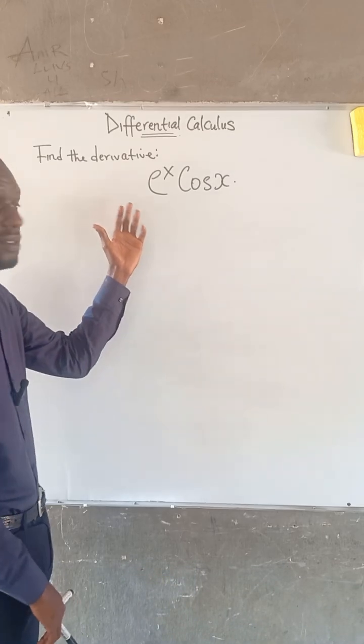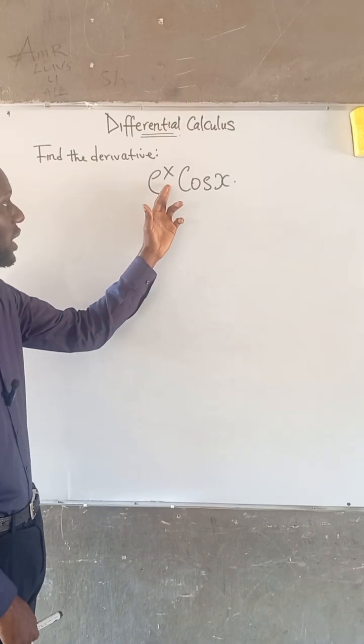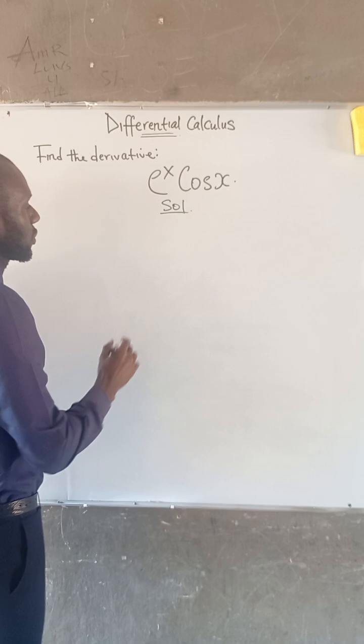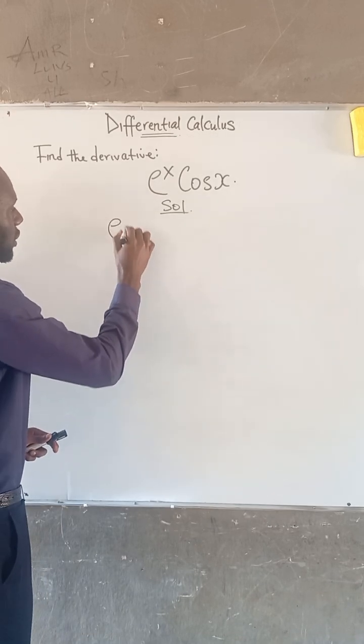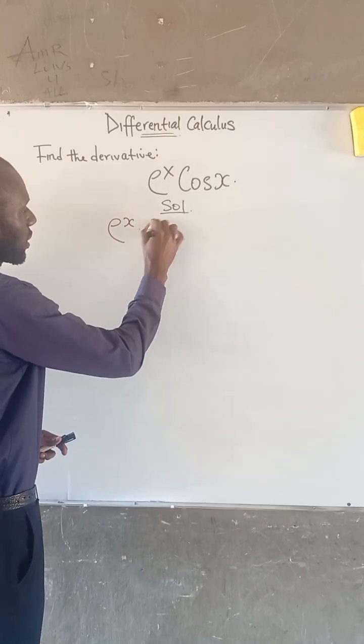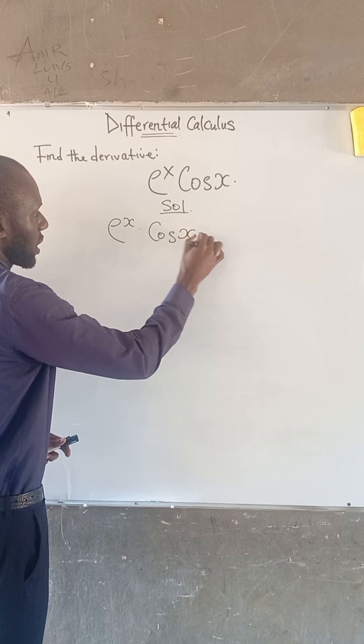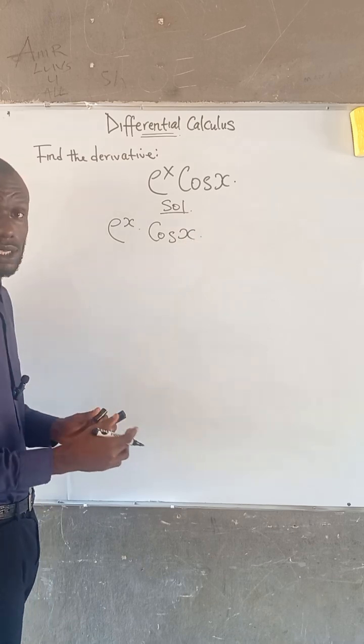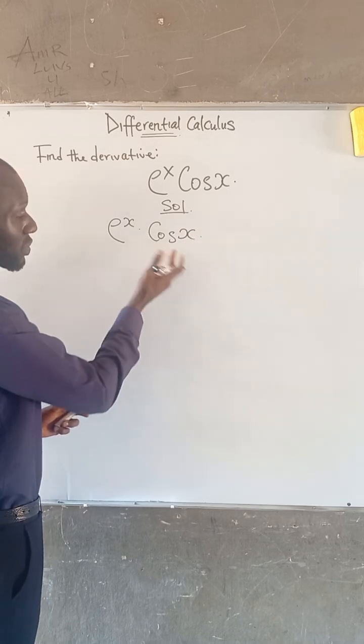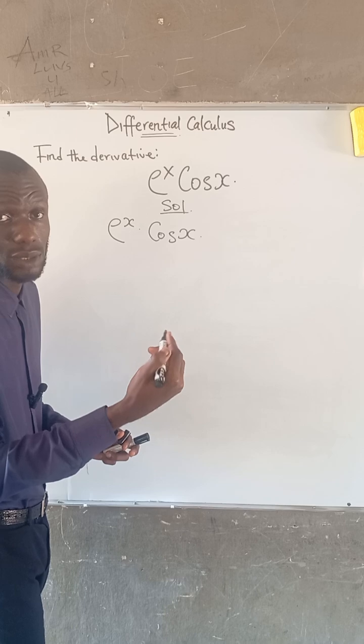They said, find the derivative of e to the power of x cos x. So we are given e to the power of x multiplied by cos x. You know that since this is a product of two terms, we are going to use the product rule.